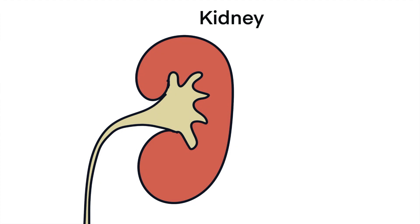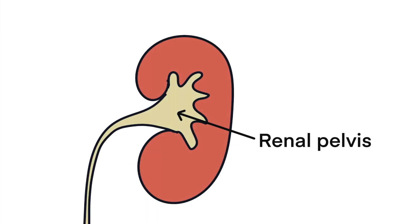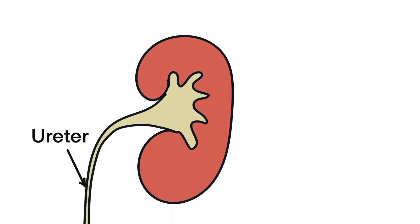To understand hydronephrosis it's necessary to have a little knowledge of the anatomy of a kidney. This is my rather primitive sketch of a normal kidney that produces urine, and the urine drains into the calyces. The calyces widen into the renal pelvis that the urine drains into, and then the urine passes down the ureter into the bladder and then out of the urethra.